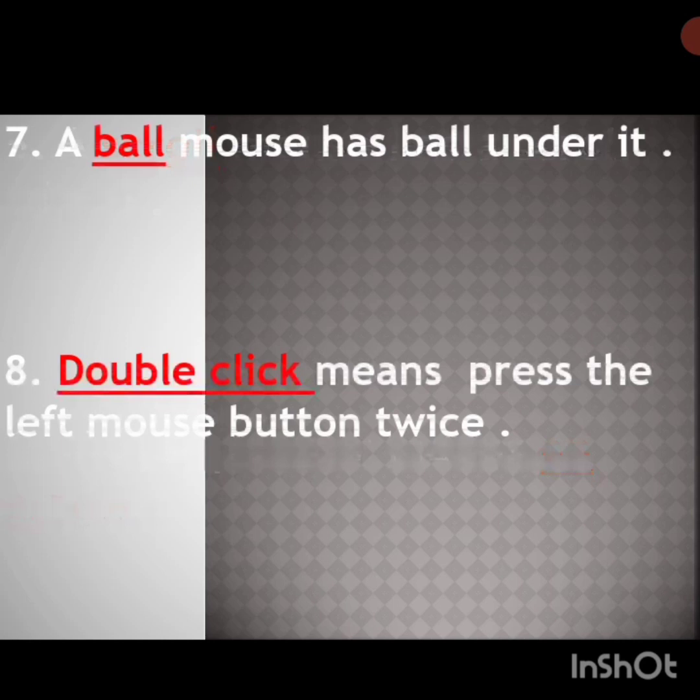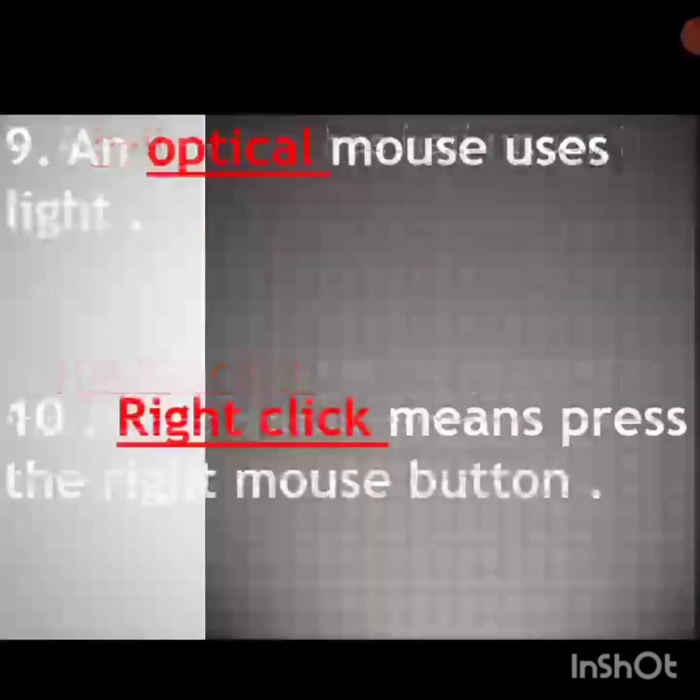A ball mouse has a ball under it. Double click means press the left mouse button twice. Next one: an optical mouse uses light.